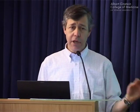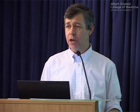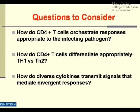The first question is, there are a very wide array of pathogens, and for each pathogen you're going to want a different type of immune response. How does the T cell know which response to orchestrate that's appropriate for that specific pathogen? How do CD4-positive T cells differentiate appropriately — Th1, Th2, Th17, Tregs — and how do diverse cytokines transmit signals that mediate divergent responses?